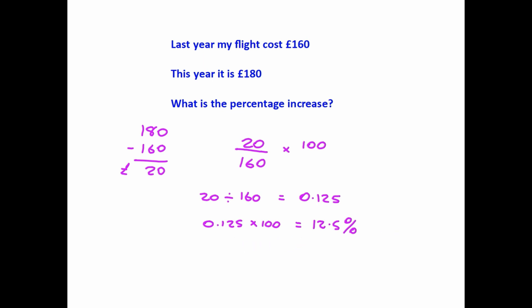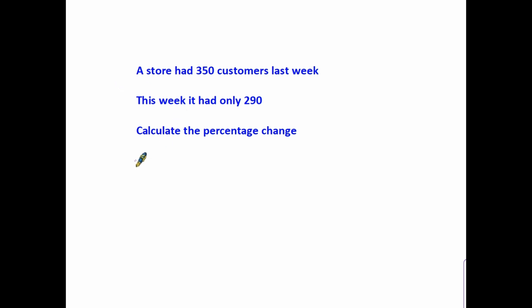Let's have a look at another example. A store had 350 customers last week; this week it had only 290. We're being asked to calculate the percentage change. In this example the only difference is that the numbers have come down from last week to this week, but the calculation is still the same. 350 minus 290 gives us the actual drop in customers — in this case, 60 customers.